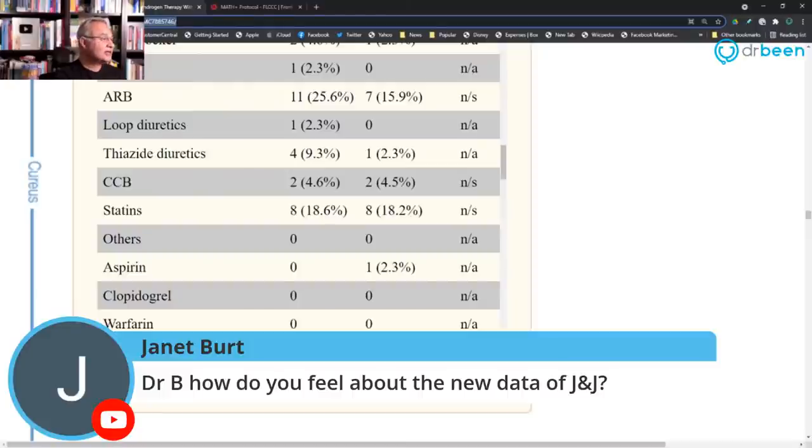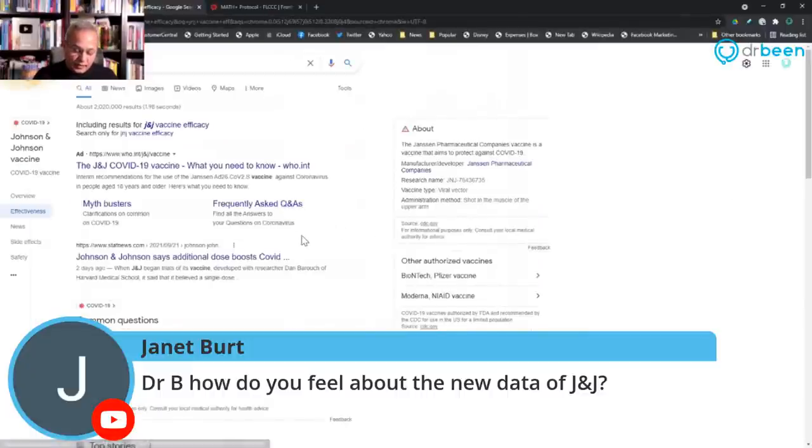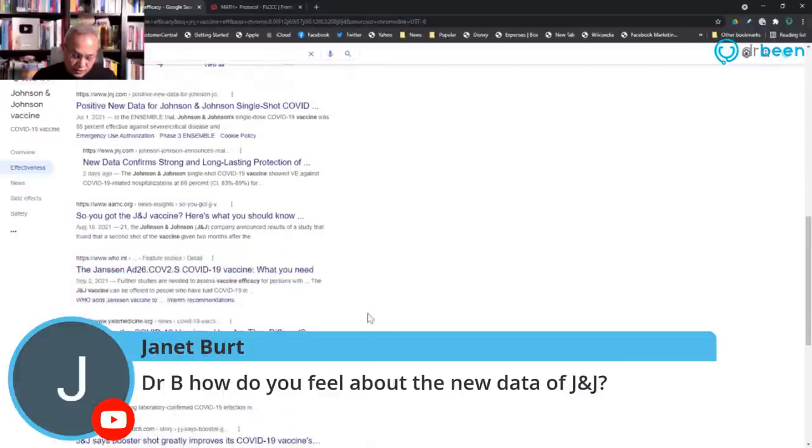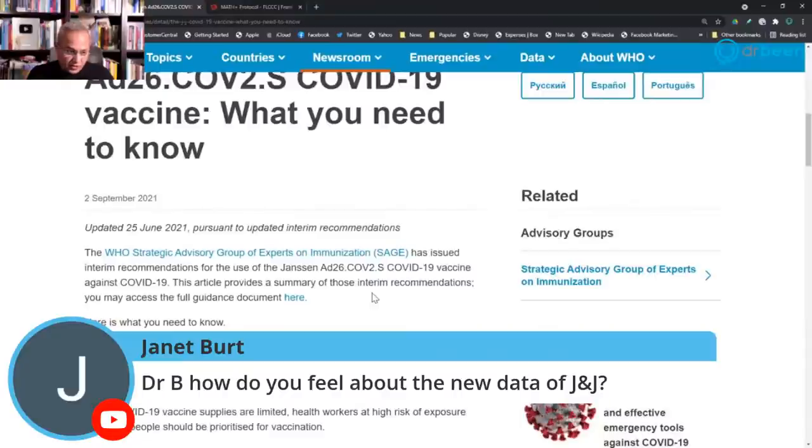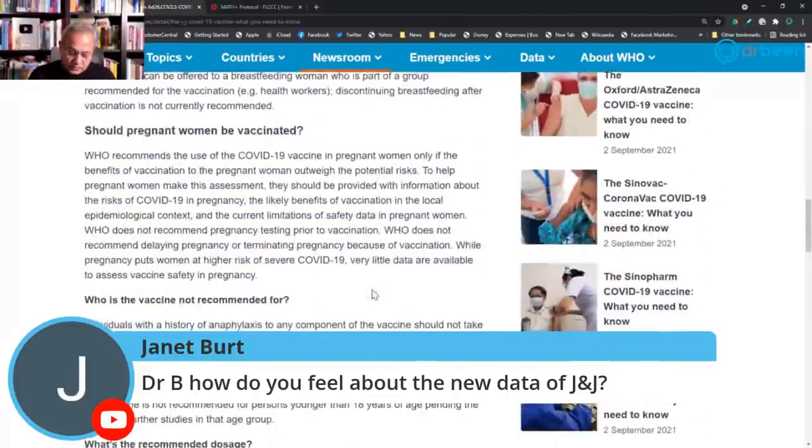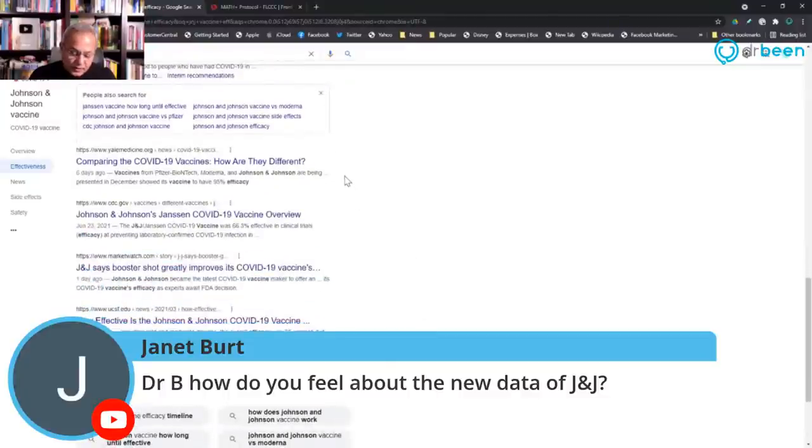Janet asks, how do you feel about the new data about J&J? Is there new data on J&J? My apologies, let me quickly do a web search. If I go to J&J vaccine efficacy, July 1st positive new data. Let's go here, J&J themselves, September 2nd, WHO. For this you need to assess the vaccine efficacy. What does WHO say? The Janssen vaccine, what you need to know. This is 2 September 2021.